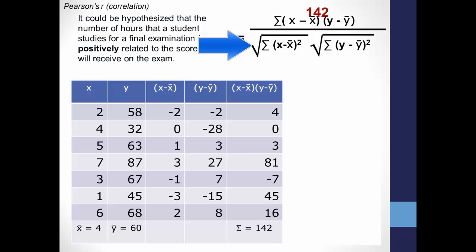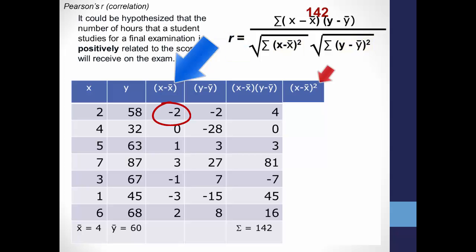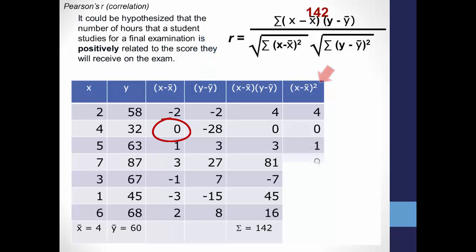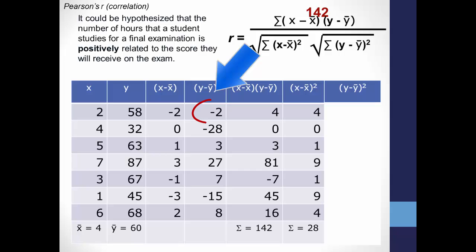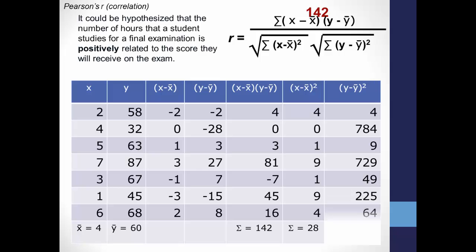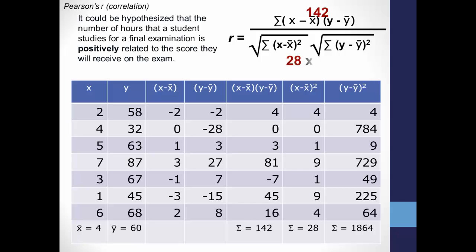Now onto the denominator, which tells you to square the result of each score minus the group mean. Go back to this column: negative 2 squared is 4; zero squared is 0; and the rest of the x scores. Sigma tells you to add all of these numbers together, and we get 28. Do the same for the y scores: negative 2 squared is 4; negative 28 squared is 784, and so on. Add them all together and you get 1864. Now you have all of the data for the denominator.